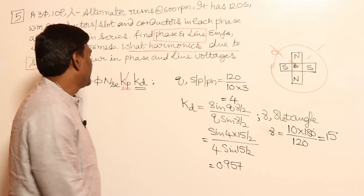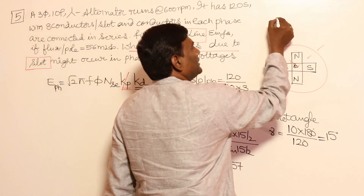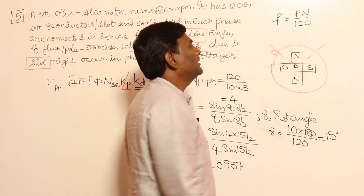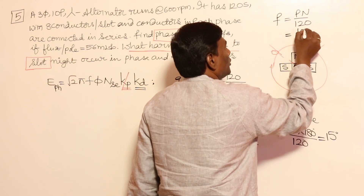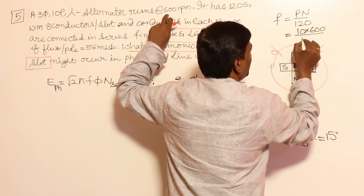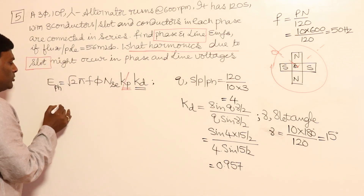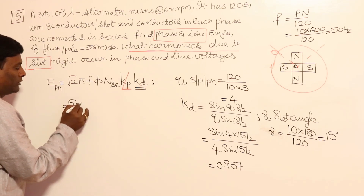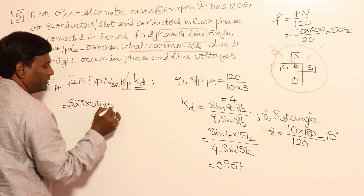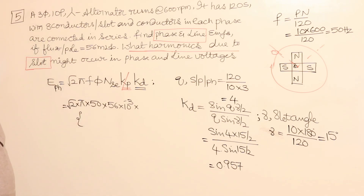Kd = 0.957 is calculated. Now frequency has to be found. f = P·N / 120. With 10 poles and speed 600 RPM: f = 10 × 600 / 120 = 50 Hz. So frequency is also found. We are all set to calculate induced voltage per phase: E = √2 · π · 50 · 56 × 10⁻³ · N_s · Kp · Kd.